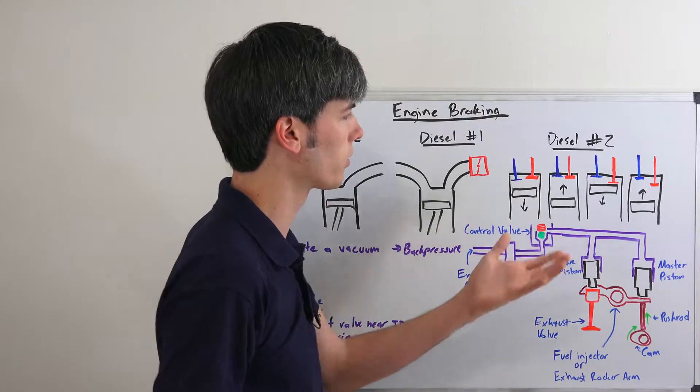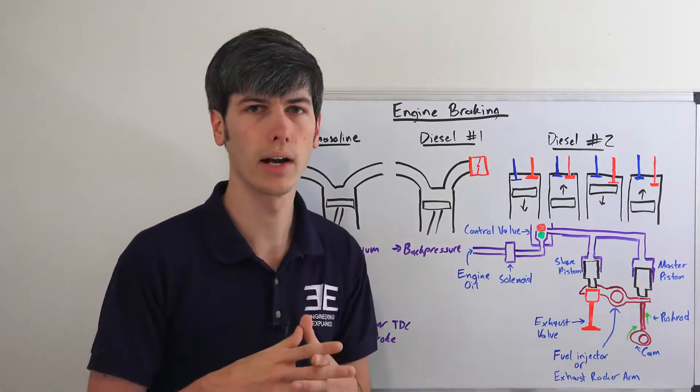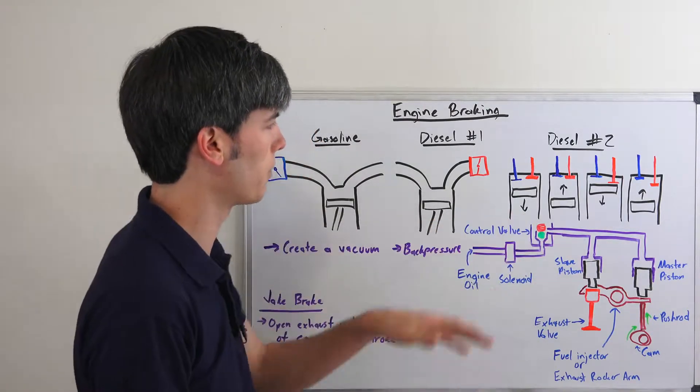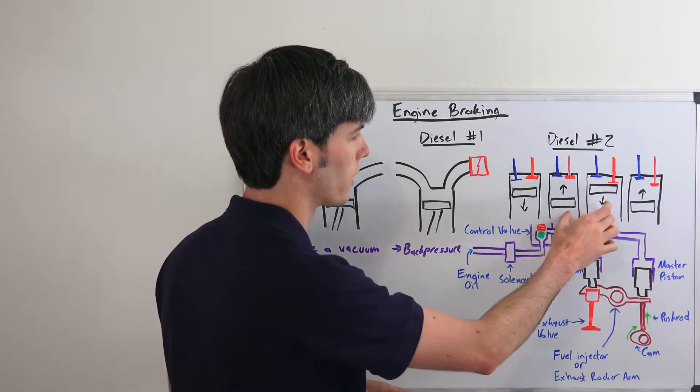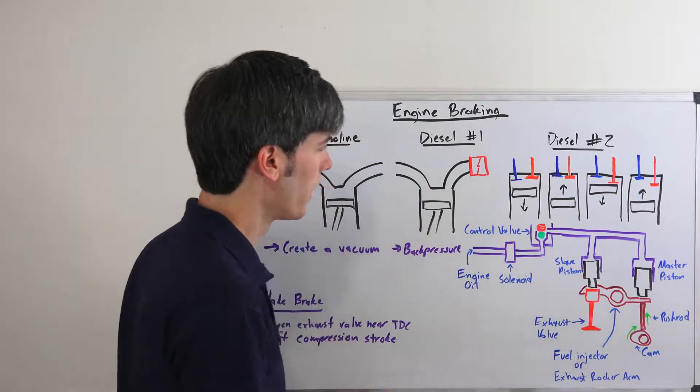essentially what you're doing is you're letting all of that pressure escape. So you've compressed all that air and then you're just letting all of it escape, and in doing so you're wasting energy. Basically you've turned your engine into an air compressor that's just sending that compressed air out the exhaust, so it's doing work but not useful work, and that's just slowing your vehicle down. And then your exhaust stroke will happen like normal.